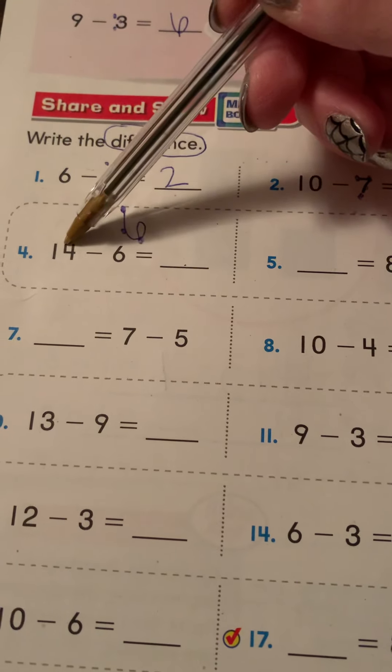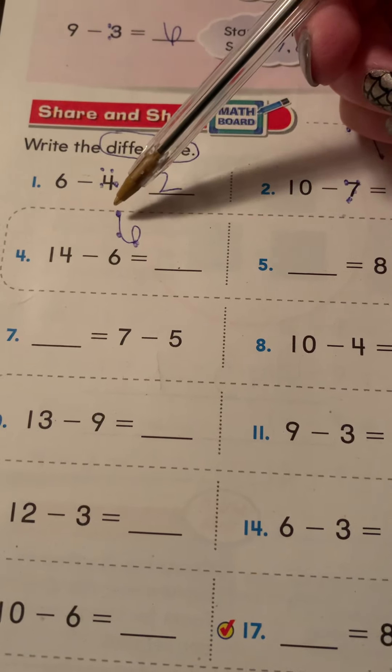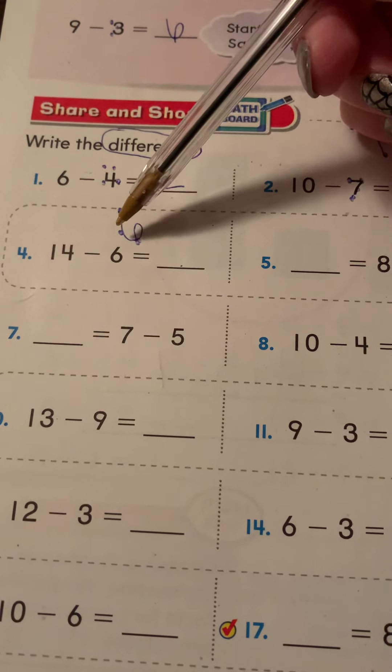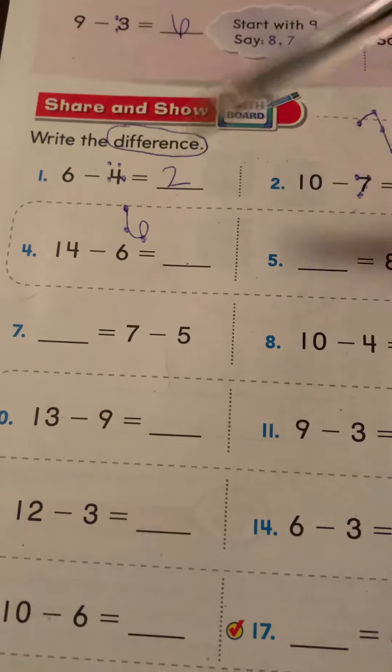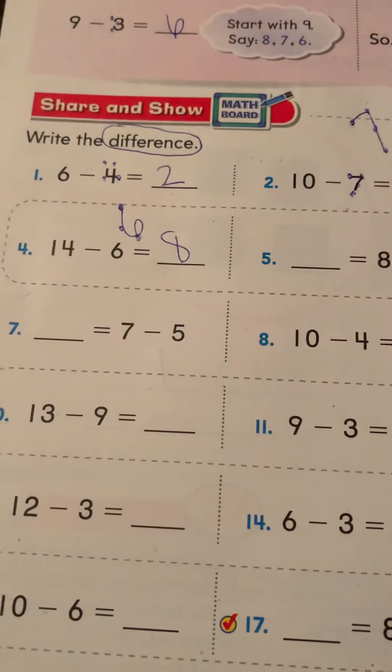So 14 in your head, let's count backwards: 13, 12, 11, 10, 9, 8. Good job.